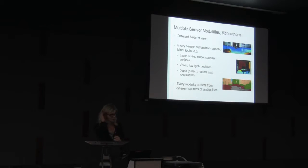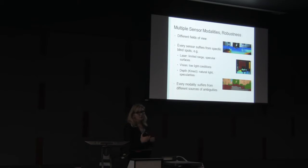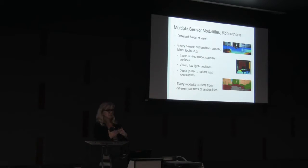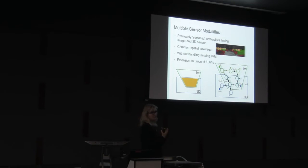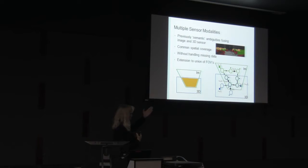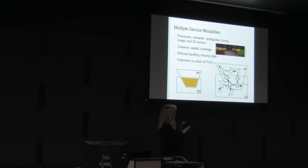Another important capability is handling multiple sensing modalities. Range sensing often has holes and gaps due to incompatible sensing at places with high specularities or transparent surfaces, where you typically don't have depth information. Yet you would still like to infer something about these regions. We can set up graph structures where, depending on whether you have both image and depth information or only one modality, we can infer semantic labels everywhere. The CRF propagates evidence to regions where sensor information is not actually present.